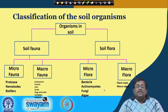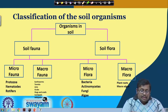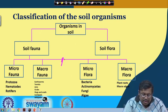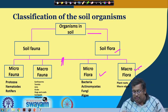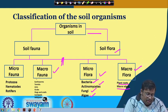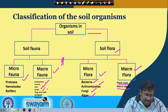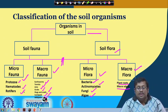Organisms in soil can be broadly classified into soil flora and soil fauna. Soil flora is divided into macroflora and microflora; macroflora includes plant roots and macro algae, while microflora includes bacteria, actinomycetes, fungi, and algae. Soil fauna includes macrofauna and microfauna; macrofauna includes earthworms, termites, ants, grubs, large snails, centipedes, and millipedes, while microfauna includes protozoa, nematodes, and rotifers.